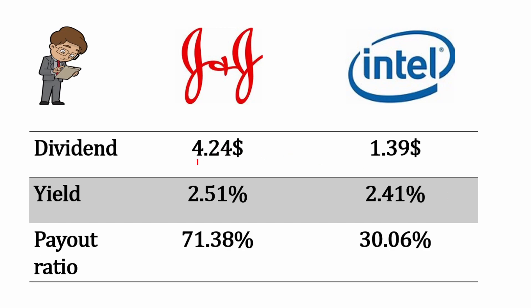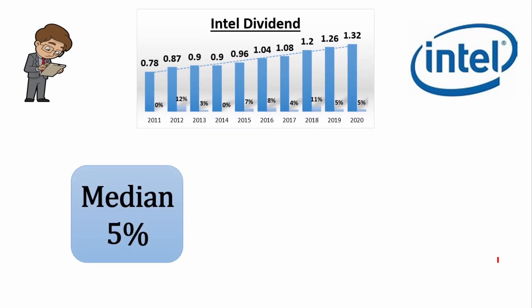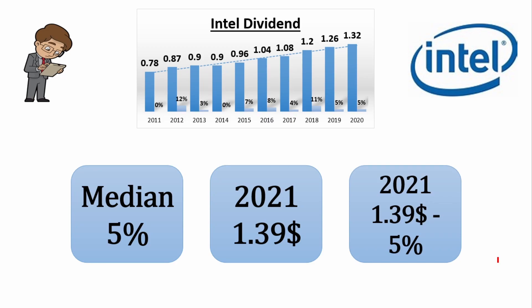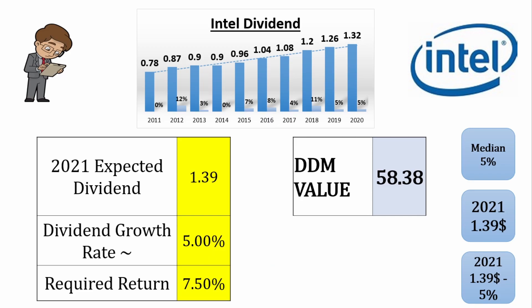Let's run our safety checks. We can see the expected 2021 dividends for Johnson & Johnson and Intel — yields of 2.5% and 2.4% respectively. The payout ratio is a little high for Johnson & Johnson, but they have free cash flow of about $20 billion, so they have no problem paying their dividend. For Intel, the numbers are lower. We can see Intel is growing their dividend nicely, with a median dividend growth rate of 5% per year. The 2021 dividend is expected to be $1.39, also representing 5% growth. Using the DDM formula with a 5% growth rate and 7.5% required return, we come up with a fair value for Intel of $58.38 — very close to the current price of $57.12.